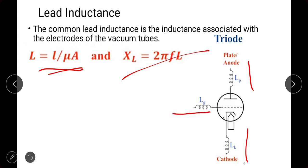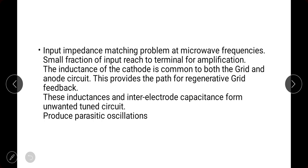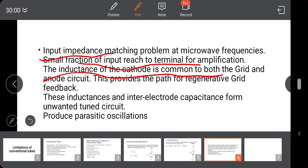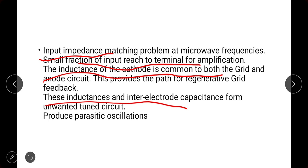We want the electrodes to offer low resistance and act as short circuits, but at higher frequency they act as open circuits due to inductance. This reduces gain: some input is provided but due to inductance the output is decreased. At microwave frequencies there is an input impedance matching problem and only a small fraction of the input reaches the terminal. The cathode inductance is common to both the grid and anode circuits, providing a path for resistive grid feedback, reducing gain further and producing unwanted parasitic oscillations.